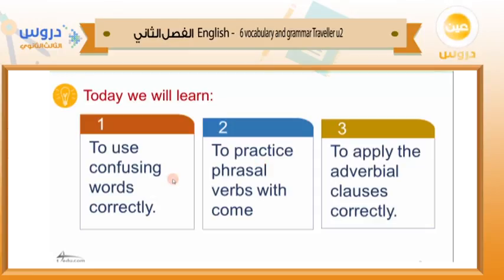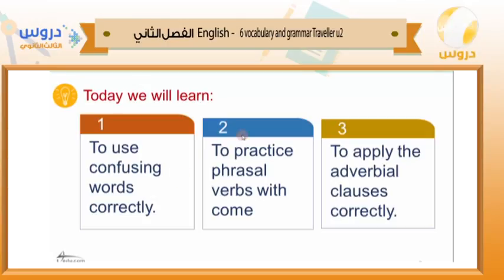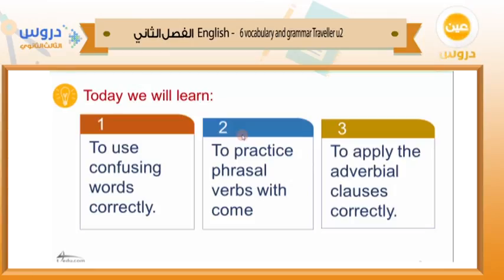For number one, we have a set of words that are confusing to us — maybe two, three, four, sometimes five words that almost have the same meaning. We need to know their meanings correctly because even though they are similar, there are still some differences in context. The best way to learn these words is always to go back to the dictionary. For number two, we'll practice phrasal verbs with 'come': come for, come into, come out, come up with, and so on.